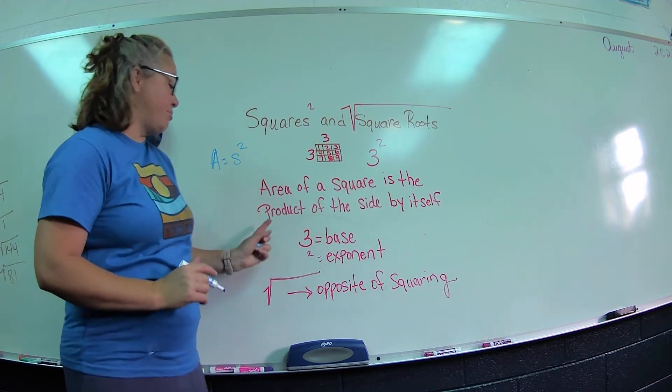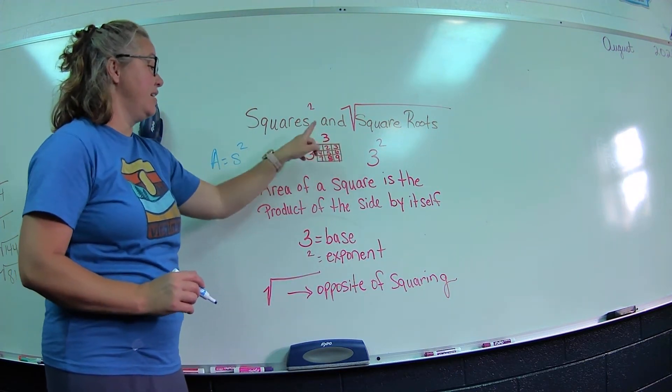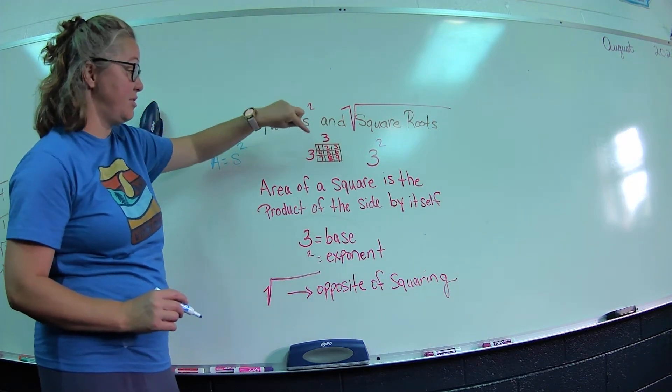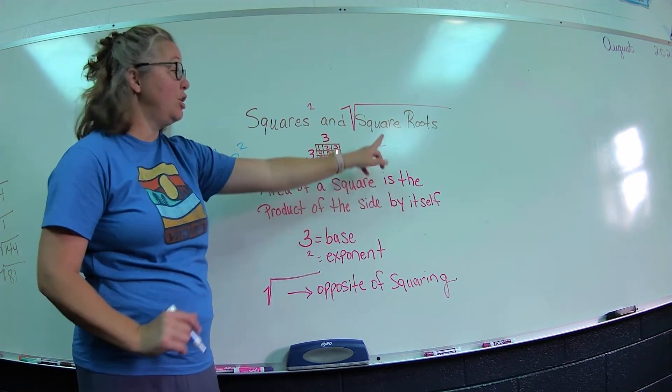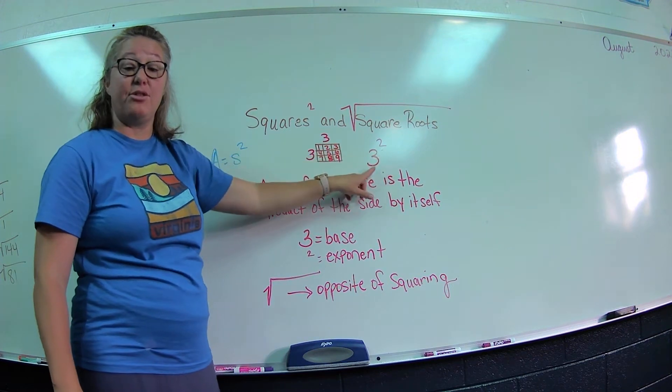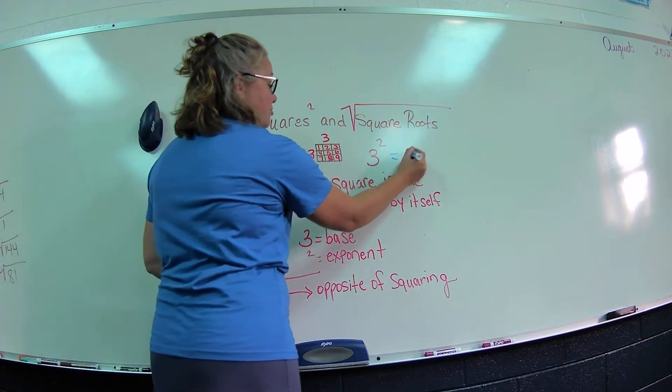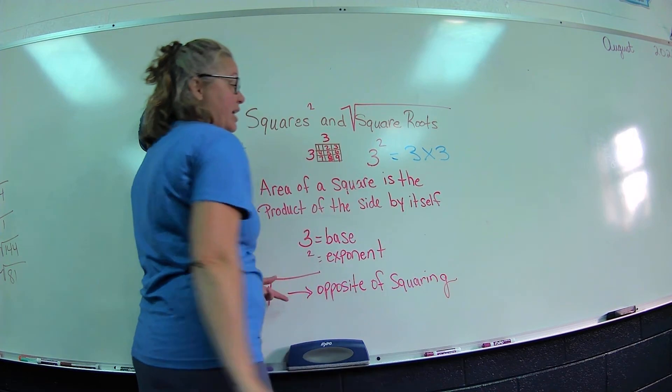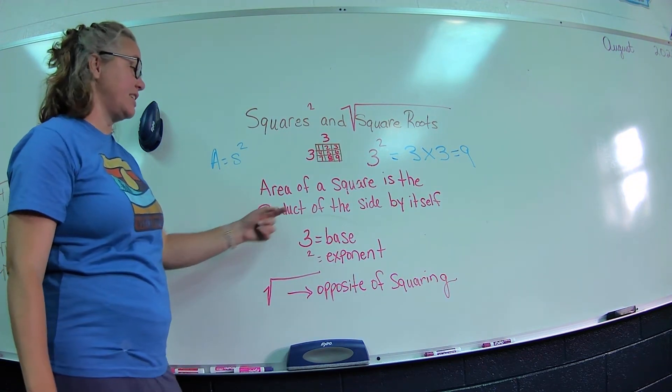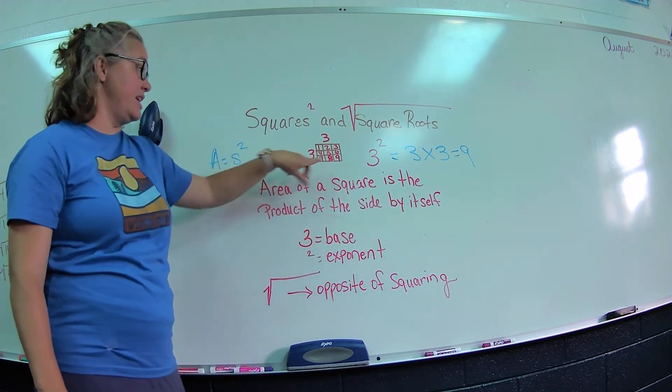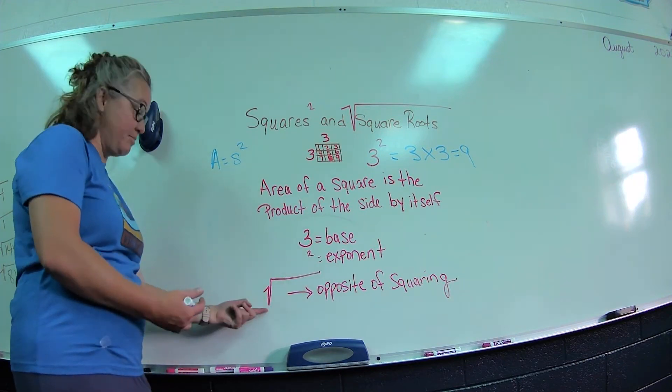Here's a little square up here that has 3 this way, 3 this way, so that's 3 times 3. Here's 3 squared: 3 is going to be your base number, 2 is an exponent. That's not 3 times 2—that means I have 3, I have 2 threes. This right here is written 3 times 3, and we know 3 times 3 gives us 9. So again, the area of a square is the product of the side by itself. The 3 in this case would be the base, and 2 is the exponent.